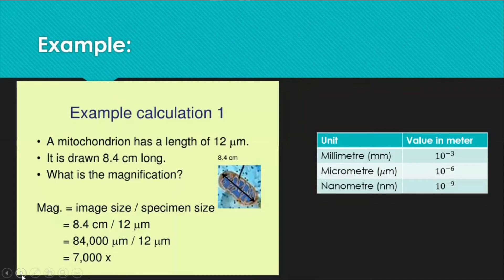Converting 8.4 centimeters gives 84,000 micrometers. 84,000 divided by 12 equals 7,000. When writing magnification, the multiplication symbol (×) must be placed before the number — so the answer is written as ×7000. This is the proper way of writing magnification, and you will not be awarded the mark if the multiplication symbol is missing.